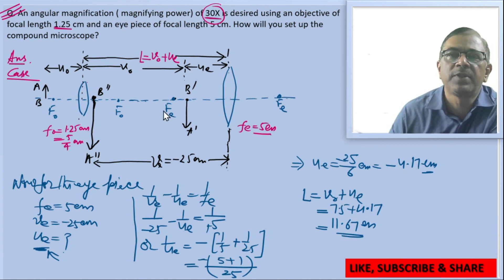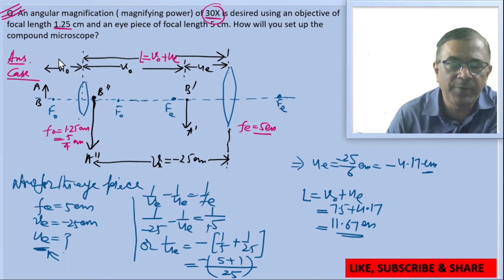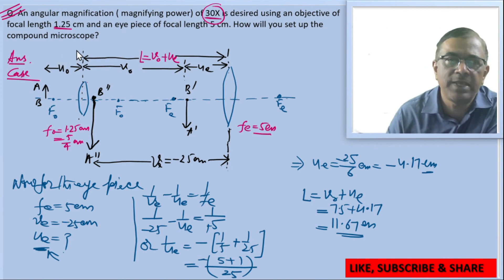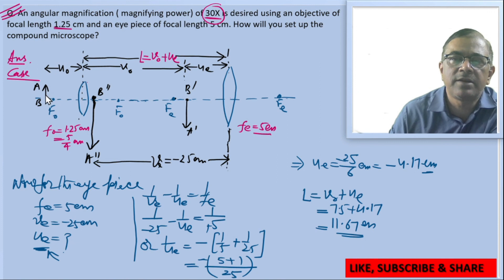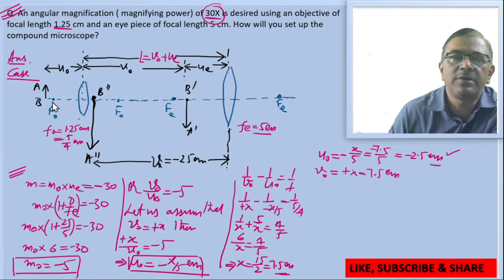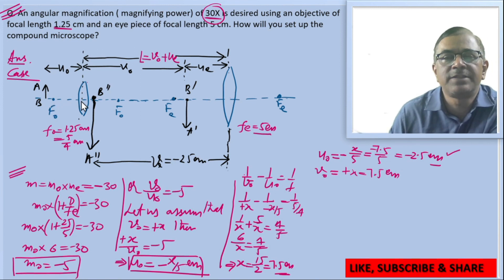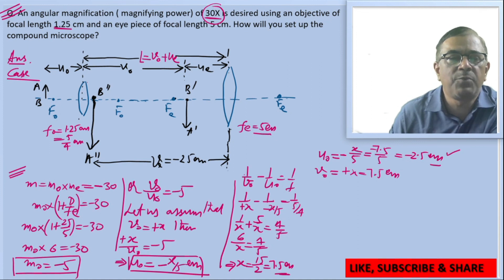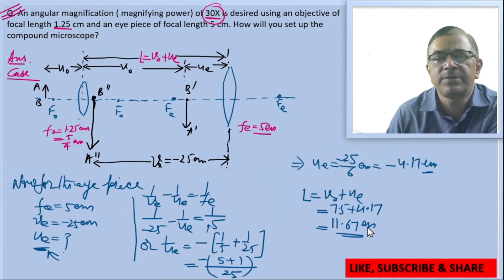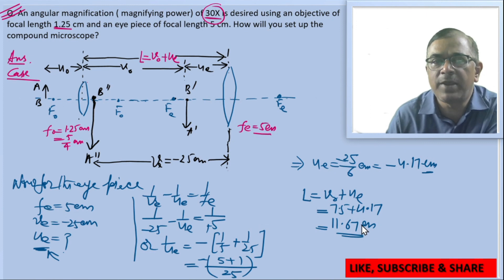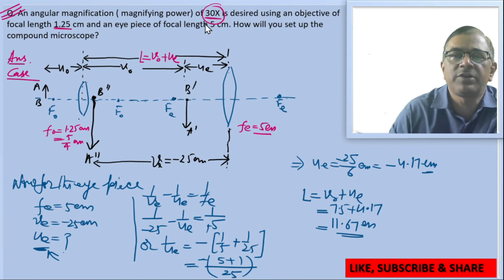The compound microscope should be set up by placing the object at a distance of 2.5 centimeters away from the objective lens, and the separation between the two lenses should be 11.67 centimeters. With this configuration, the compound microscope will produce a magnification of 30.